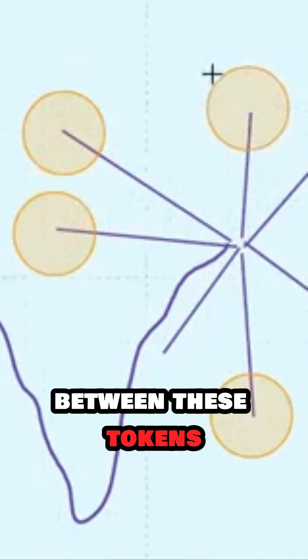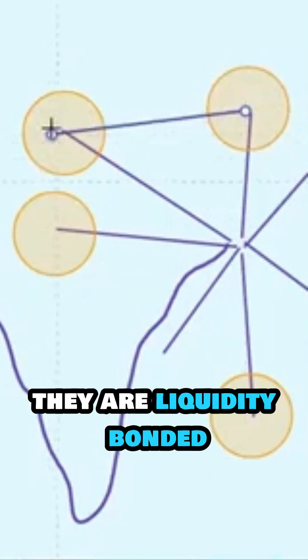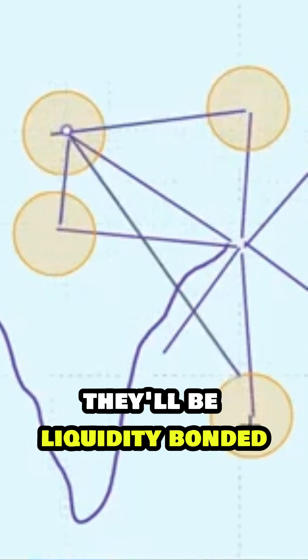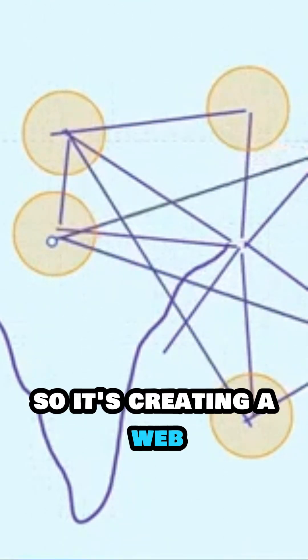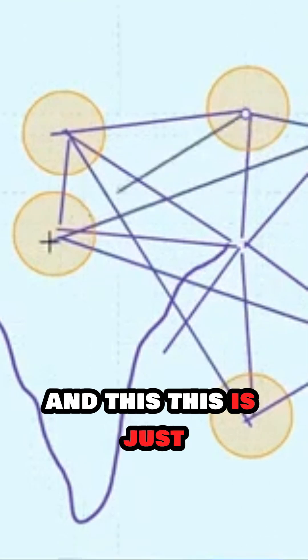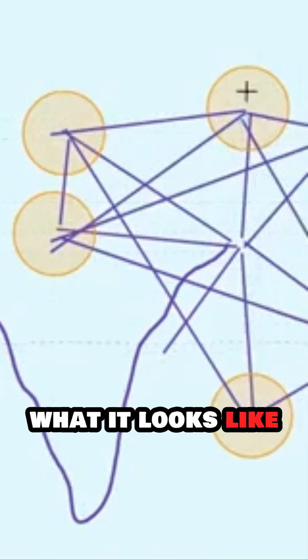Between these tokens, they are liquidity bonded. They'll be liquidity bonded in a variety of different ways. So it's creating a web of liquidity bonding. And this is just to show conceptually what it looks like.